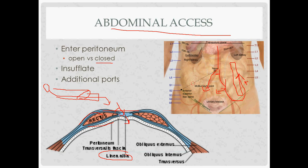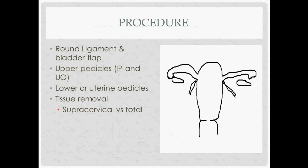Ports are typically placed at the navel and two lateral positions, or just one lateral port. For the procedure itself, start by inspecting and checking everything in the abdominal cavity.